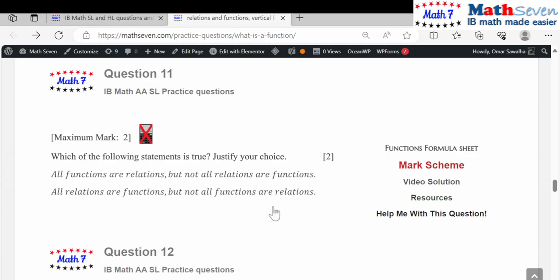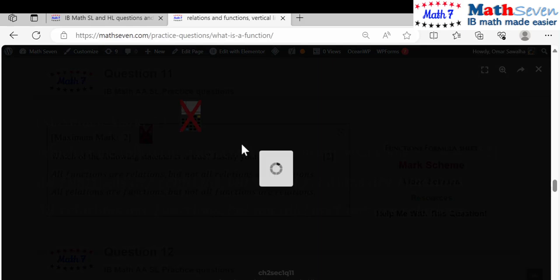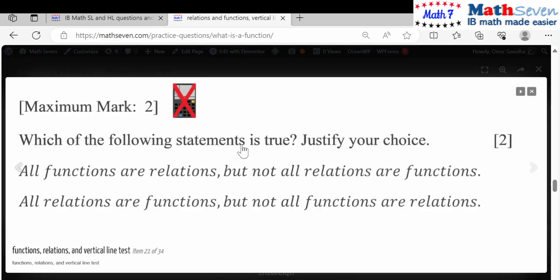This is for question number 11. It says which of the following statements is true? Justify your choice. Now, all functions are relations but not all relations are functions. This is true. Okay, so the bigger scope, let's say, are relations. And from these relations you will have functions, you will have non-functions, and so on.